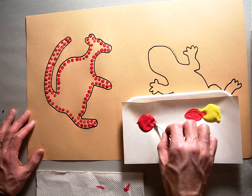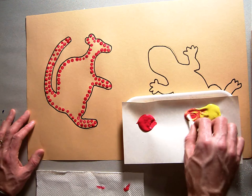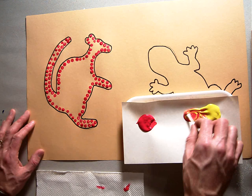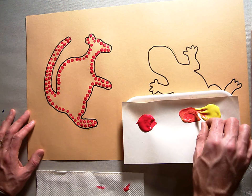Because remember we're mixing our secondary colors. So we're not using our secondary colors out of the tube. I am not using orange out of the tube. I'm mixing my own orange right here. And orange is going to be my second color.